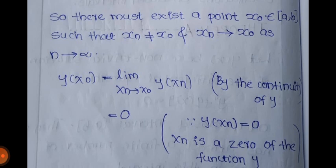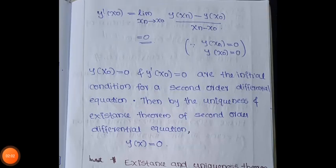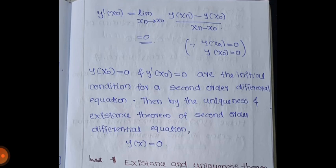By continuity, y(x_0) = lim_{x_n → x_0} y(x_n) = 0, since each x_n is a zero of y. Now y'(x_0) = lim_{x_n → x_0} [y(x_n) − y(x_0)] / (x_n − x_0) = 0, since y(x_n) = 0 and y(x_0) = 0.